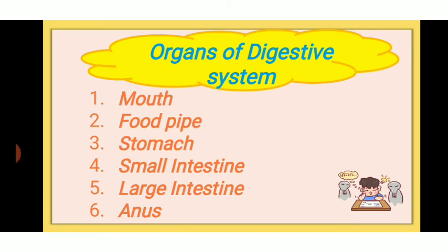Again, repeating the organs of the digestive system: mouth, food pipe, stomach, small intestine, large intestine, and anus.